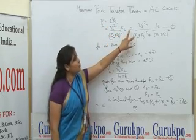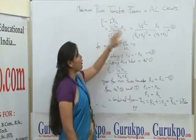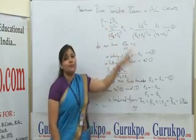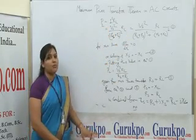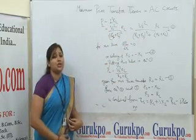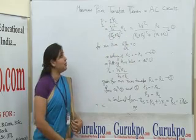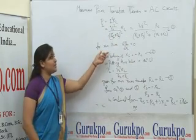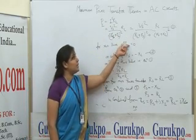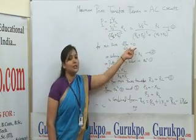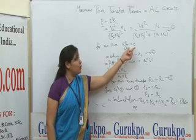On solving this equation we get the value of Pl. As we all know that for maxima or minima, the differentiation of the function should be zero. That is why, for maximum power transfer, dPl/dXl should be equal to zero.